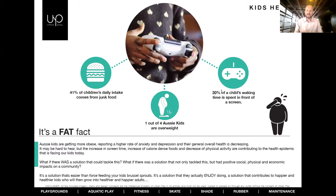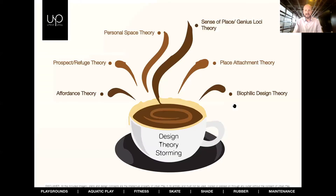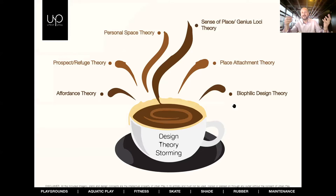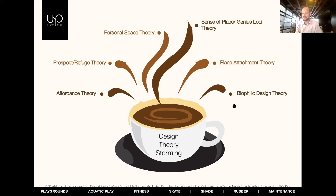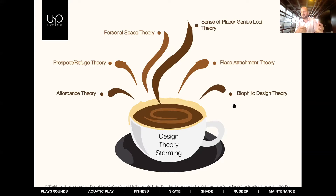When I read the book I went back to the office and drew a coffee cup with the different theories coming out like smells. That poster is now in front of everyone at Urban Play, and after every design we sit together, drink coffee and reflect — did we really look at sense of place? What is the narrative? What questions do we need to ask the client? We check each theory: sense of place, place attachment, biophilic design, personal space, prospect refuge and affordance.